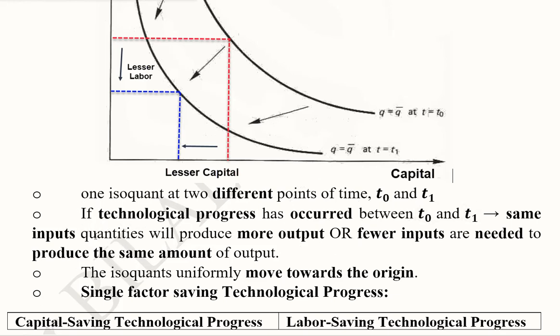If technological progress has occurred between t₀ and t₁, the same inputs are able to produce more output. Or in other words, fewer inputs are needed to produce the same level of output. So we considered the second possibility and we considered the same level of output.